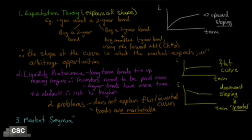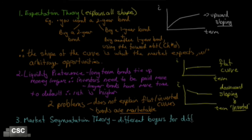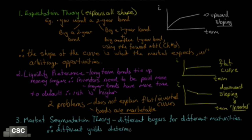Finally, we have market segmentation theory, which also tries to explain the shape of the yield curve. It says there are different buyers for different maturities — the large investors who buy short-term debt are not the same people buying 10-year or 30-year debt. Because there are different markets for each maturity, they all have different supply and demand fundamentals. So the yield curve reflects what each separate market expects for its own maturity. Of all three theories, expectation theory is probably your best bet to explain the yield curve across every type of market.